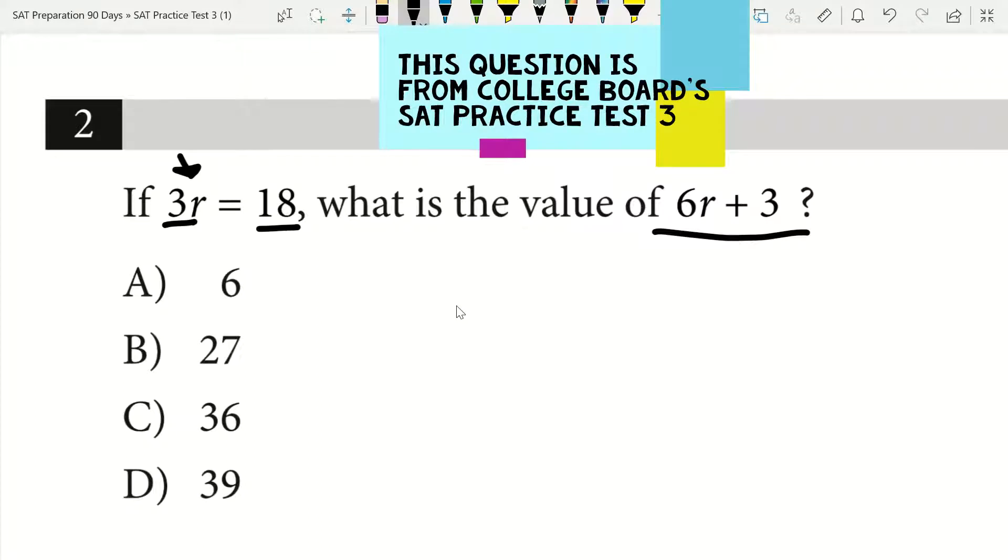Solving for R is going to take you a lot longer than if you were to say, if 3R equals 18, I know that 3R times 2 gives me 6R, so I take 18 times 2, that's going to give me 36. 36 plus 3, that equals 39.